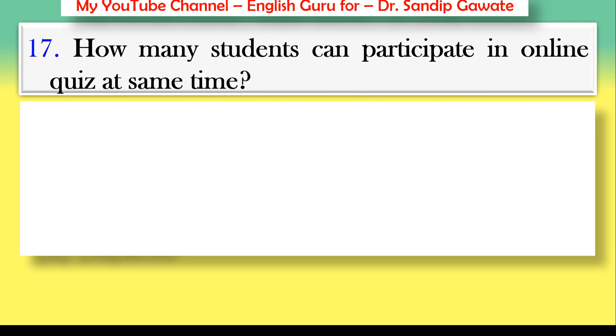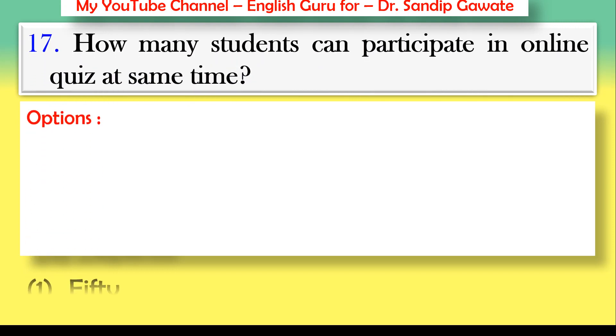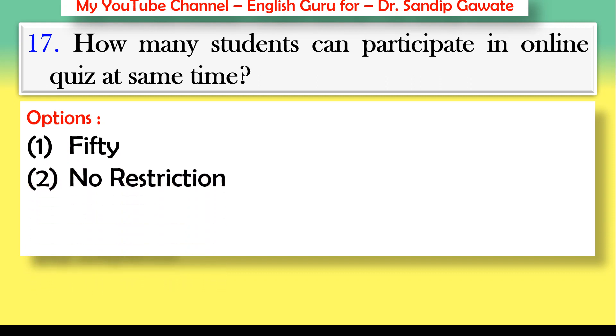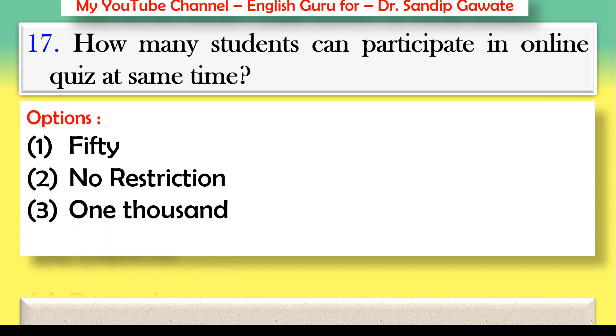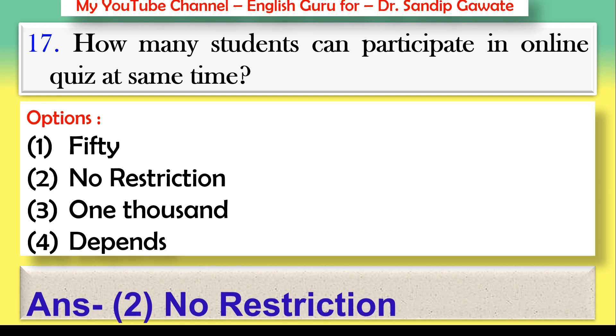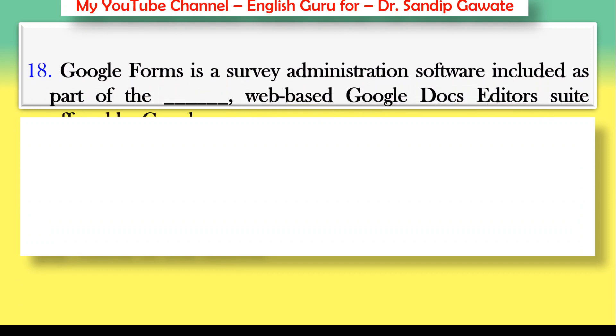Question 17: How many students can participate in an online quiz at the same time? Options: 50, no restriction, 1000, or depends. The correct answer is option number two — there is no restriction for participants.